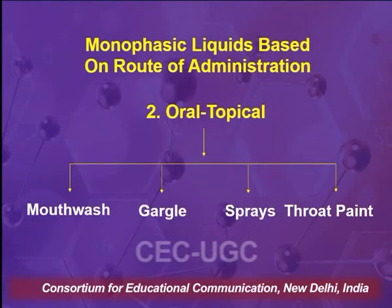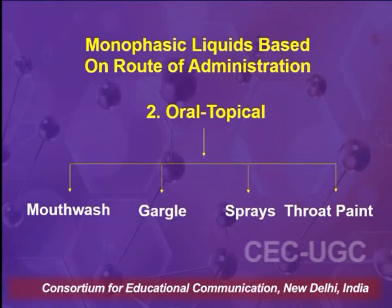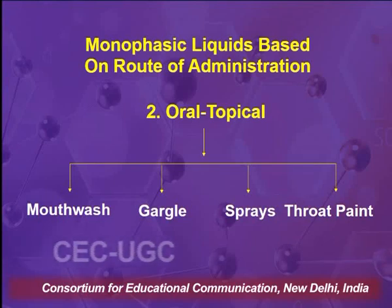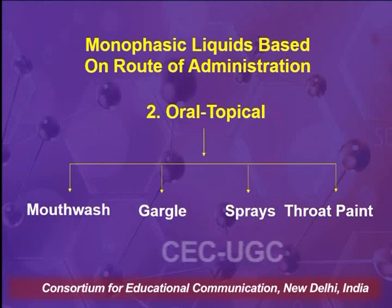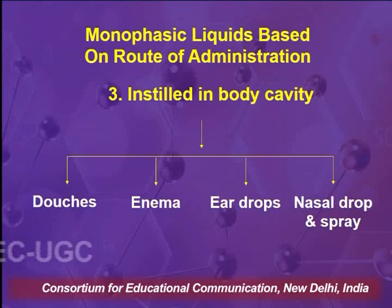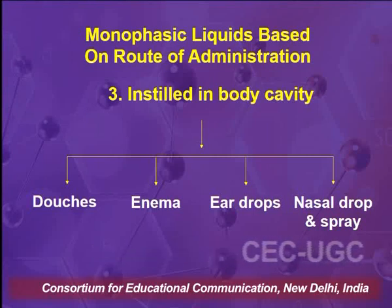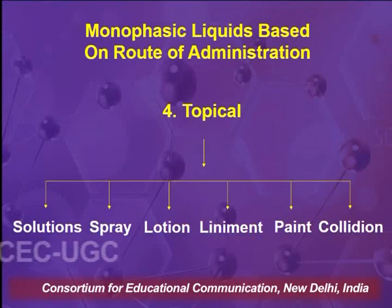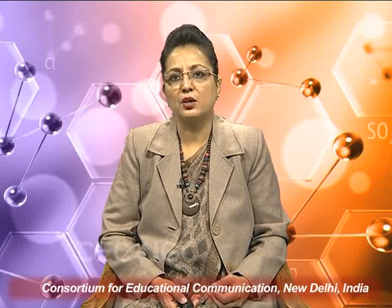The second classification based on route of administration is oral but meant for topical purpose, which includes mouthwashes, gargles, sprays, and throat paints. The third category includes monophasic liquids to be instilled into body cavities, such as douches, enemas, ear drops, and nasal drops or nasal sprays. The fourth classification includes solutions, sprays, lotions, liniments, paints, and collodions for external skin use.